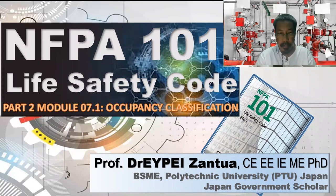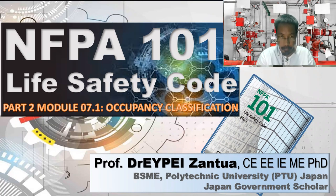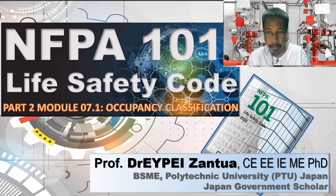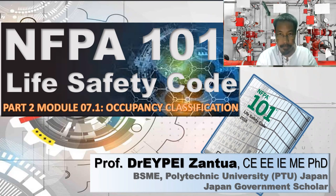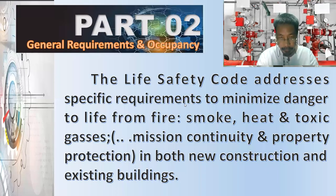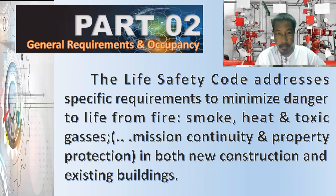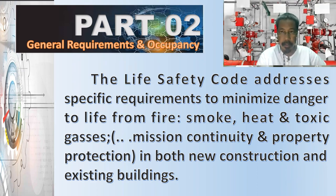We are now on module number seven, which is about occupancy classification. Let's start with the objective of the code, which states that the Life Safety Code addresses specific requirements to minimize danger to life from fire — including smoke, heat, and toxic gases. In doing so, it also provides mission continuity and property protection in both new construction and existing buildings.